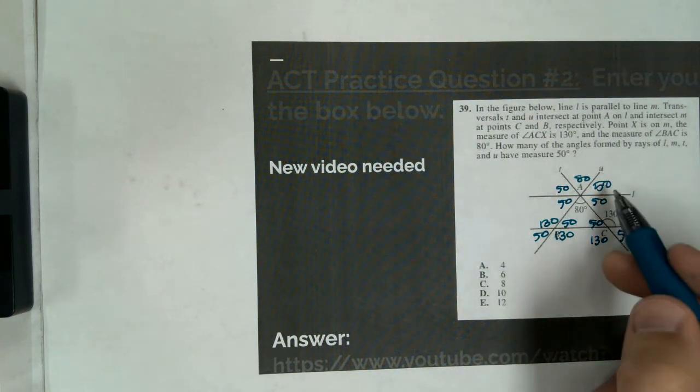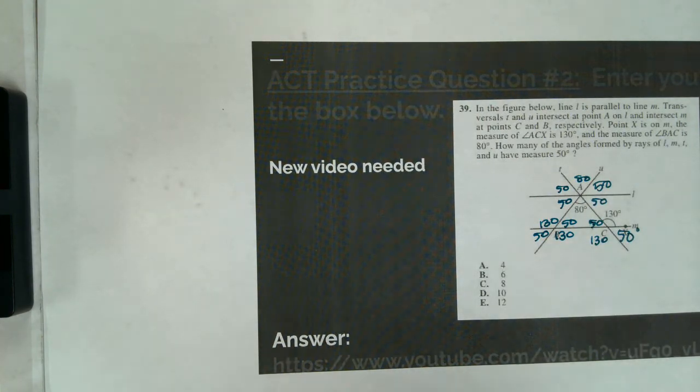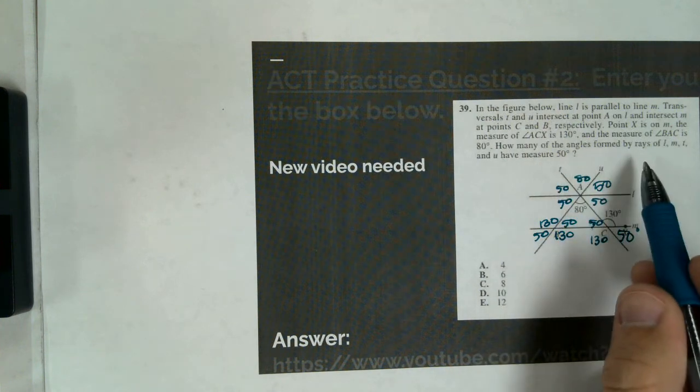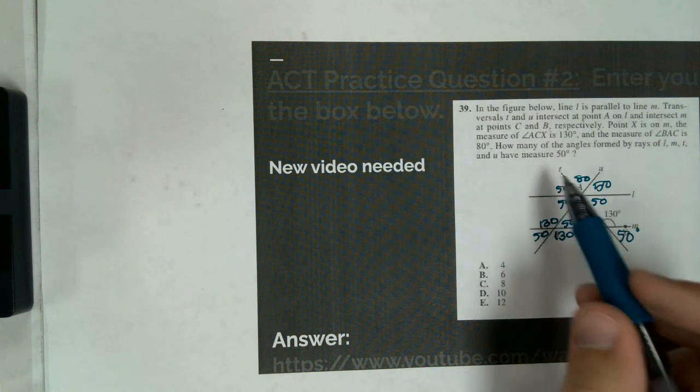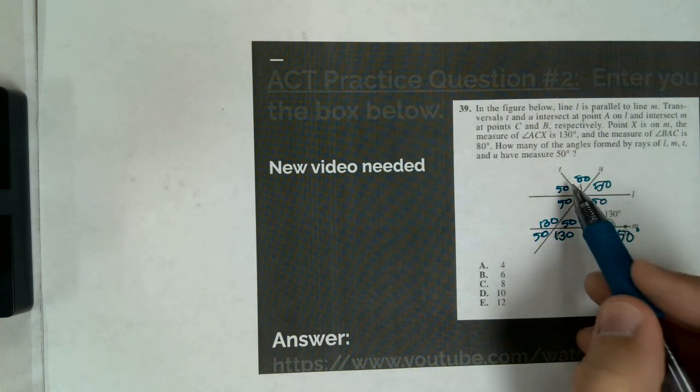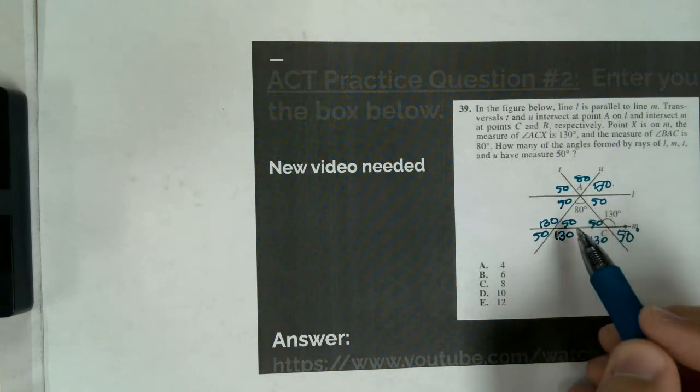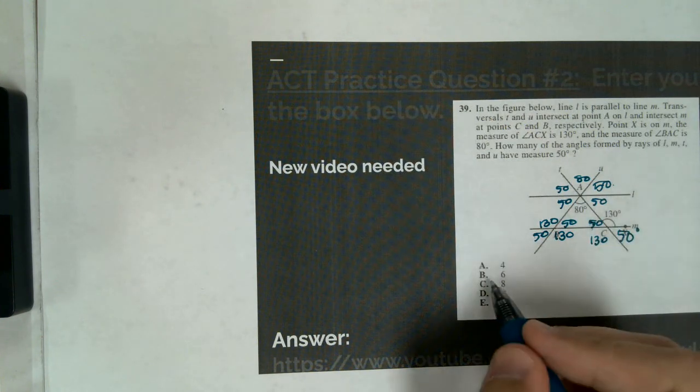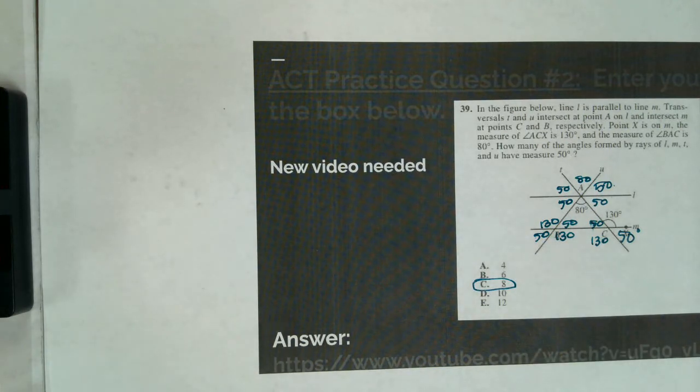So now we've gone through, and we've identified basically the measure of every single angle in this picture. And so now we look back, how many of the angles formed by all of these lines have a measure of 50 degrees? So we have 1, 2, 3, 4, 5, 6, 7, 8. So our answer will be C.